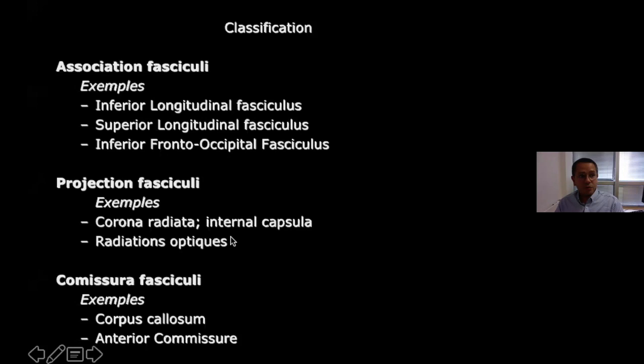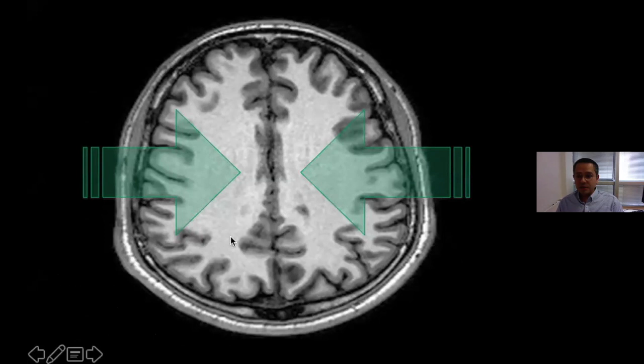The fornix may also be considered an association fascicle because it connects the temporal lobe with a small portion of the septal area and the subcallosal cortex. So we have fibers with association, projection, and commissural behaviors in the same fascicle. For understanding this, we will organize differently — not applying exactly this classification order. We will progress from the periphery of the hemisphere to the depth, starting with the cerebral cortex of the lateral aspect and finishing with the medial aspect.